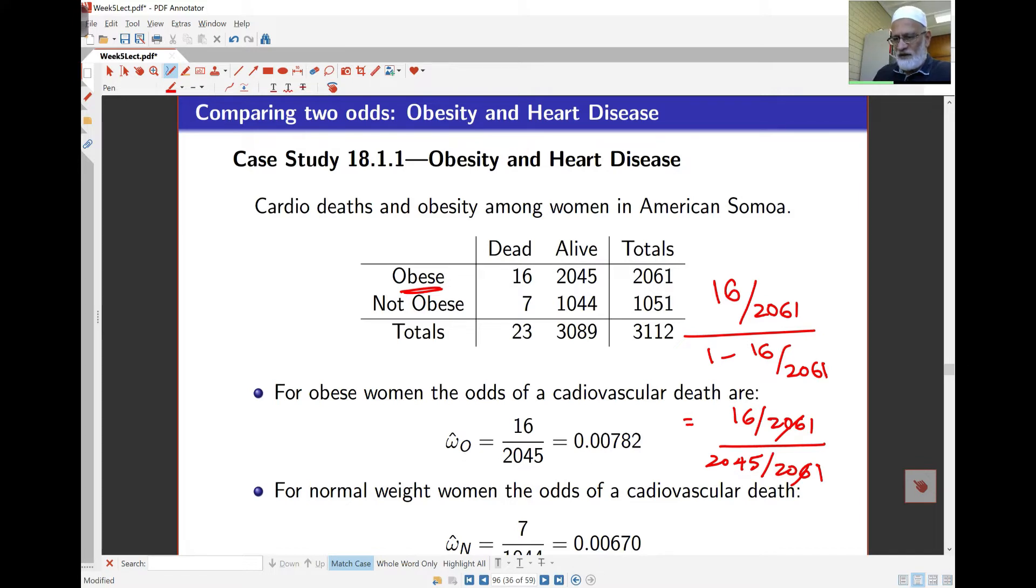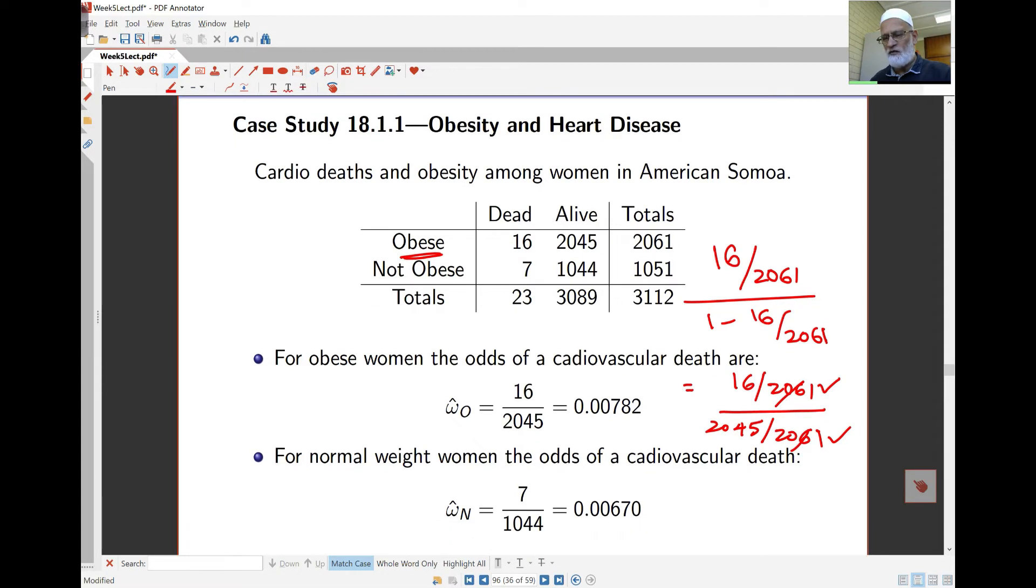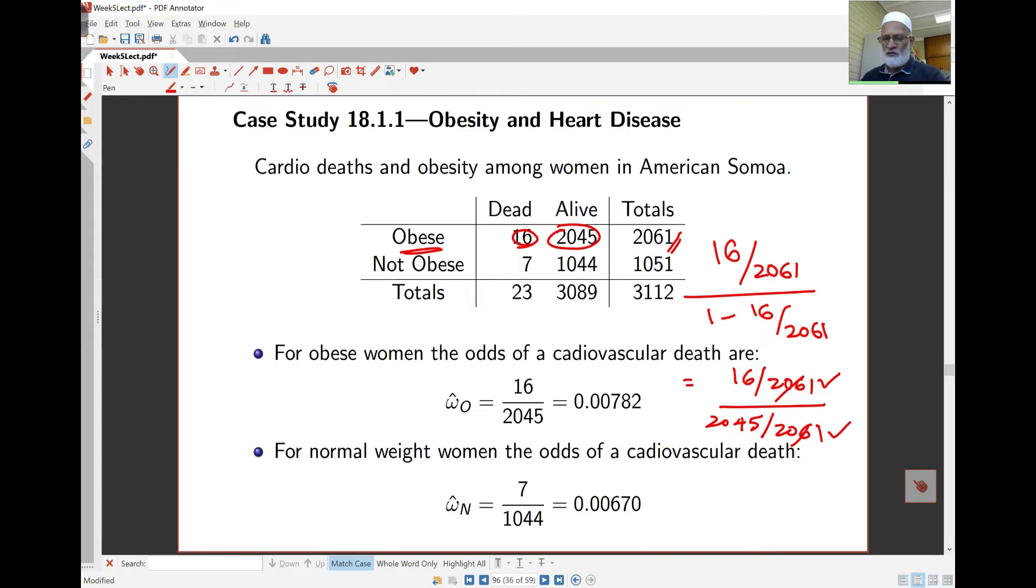The other ways of getting this: I'm looking here at the probability of death over probability of no death. Probability of death is 16 over 2061, and probability of no death is just 2045 over 2061. So either way, it still comes to 16 over 2045. Essentially, it's just this number over that number since this common denominator is involved from them. So that's 0.00782, quite small.